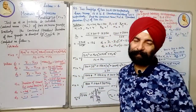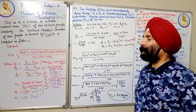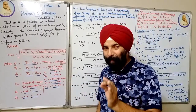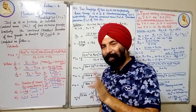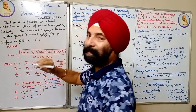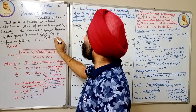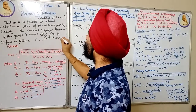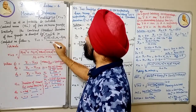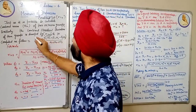Now let's understand what D1 is. D1 = mean of the first series minus combined mean. Combined mean of 1, 2, 3 series is equal to: (mean of first × N1 + mean of second × N2 + mean of third × N3) upon (N1 + N2 + N3). This is the formula of combined mean.